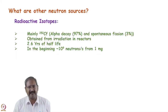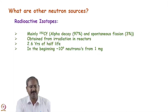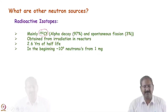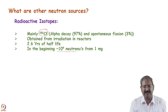For getting higher and higher flux, some artificially created radioisotopes are used. Mainly californium-252 is used as a neutron source and it gives a flux of 10 to the 9 neutrons per second. This californium is obtained through nuclear reactors.